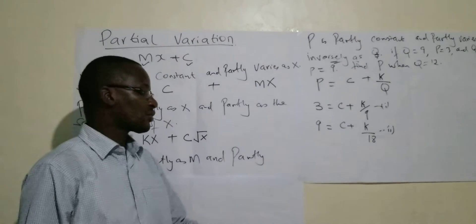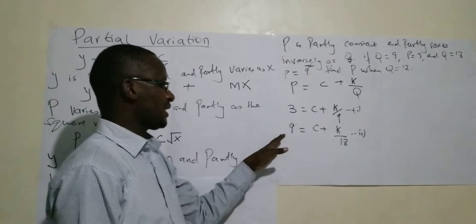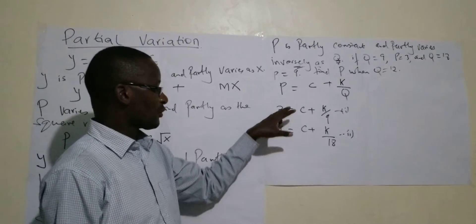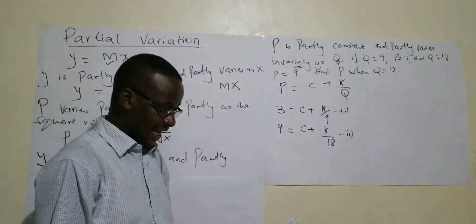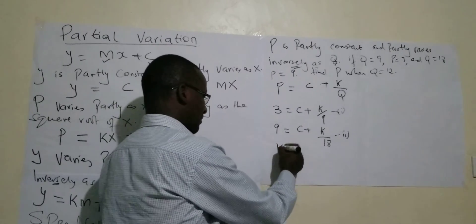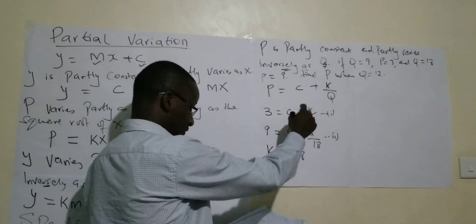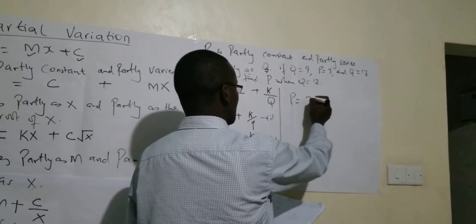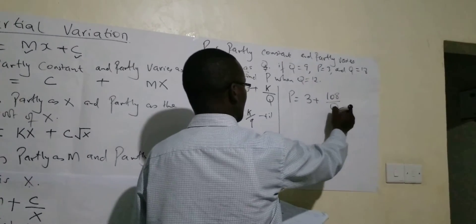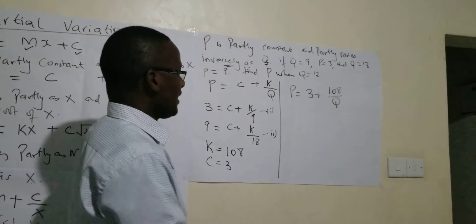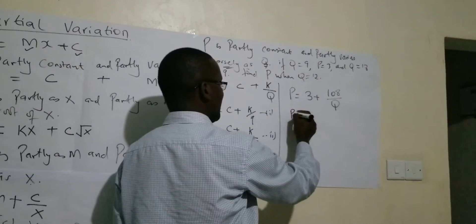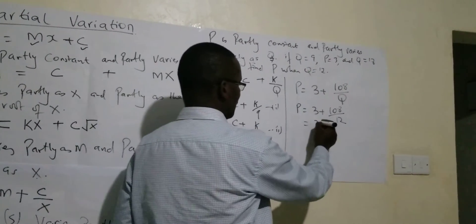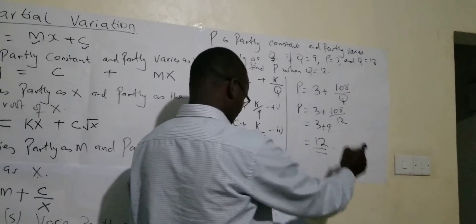You have two equations. Solve those two equations simultaneously the way you know — this comes from your knowledge on linear equations. Solve using elimination, substitution, or any other method. You can confirm that K = 108 and C = 3. So our equation is P = 3 + 108/Q. Then, find P when Q = 12: P = 3 + 108/12. When you divide 108 by 12 you get 9, so P = 3 + 9 = 12.